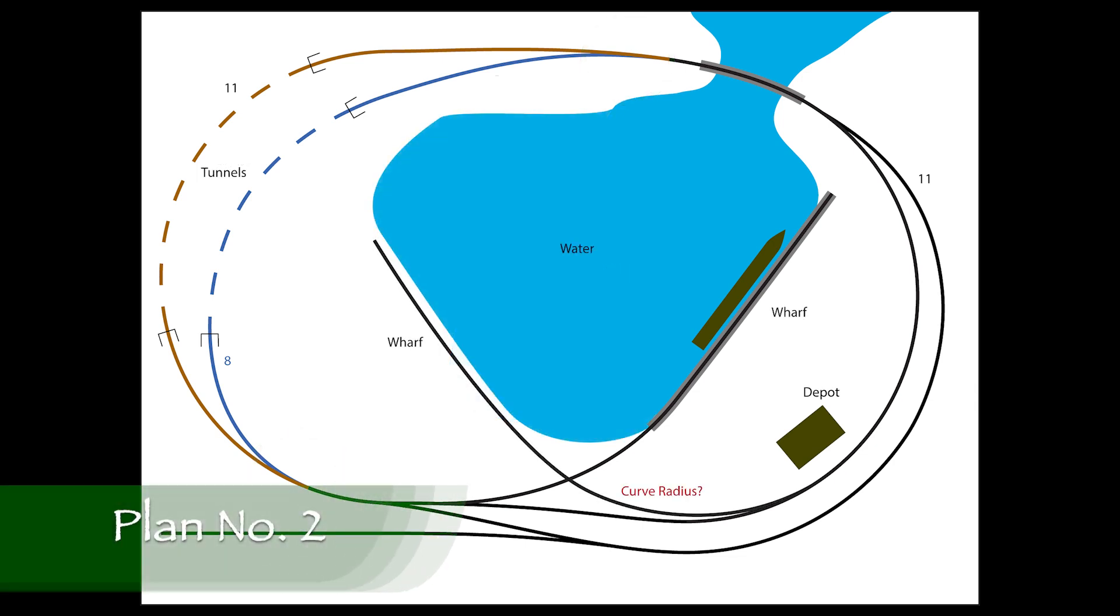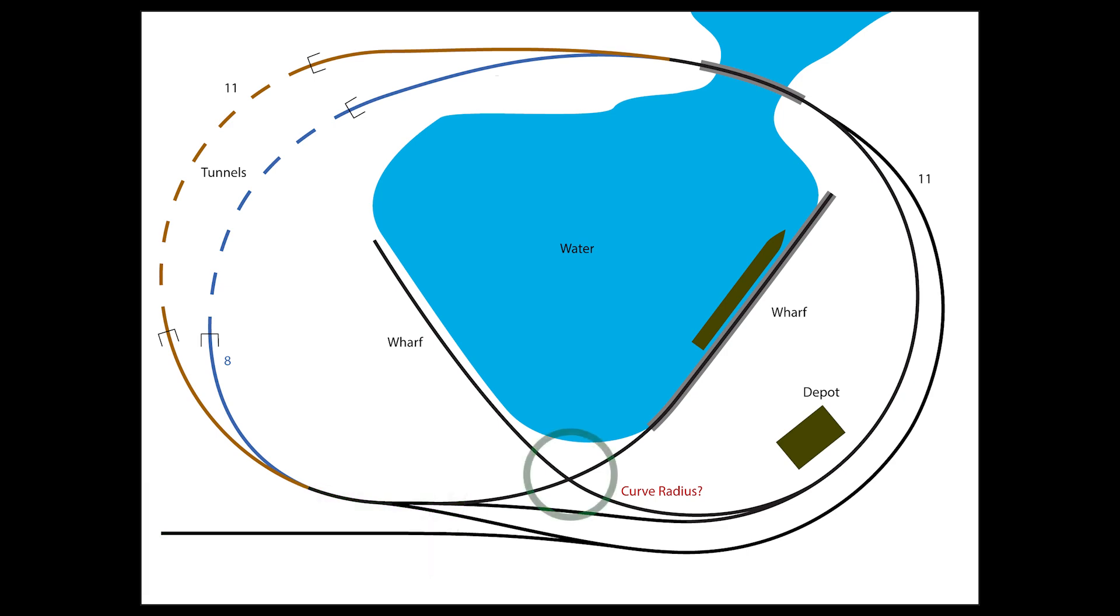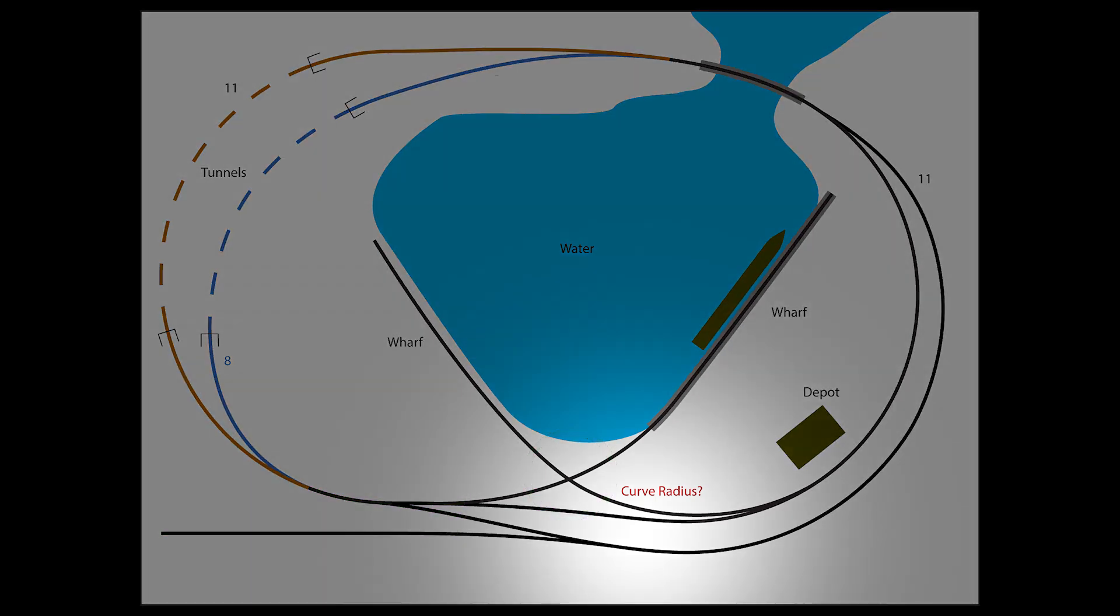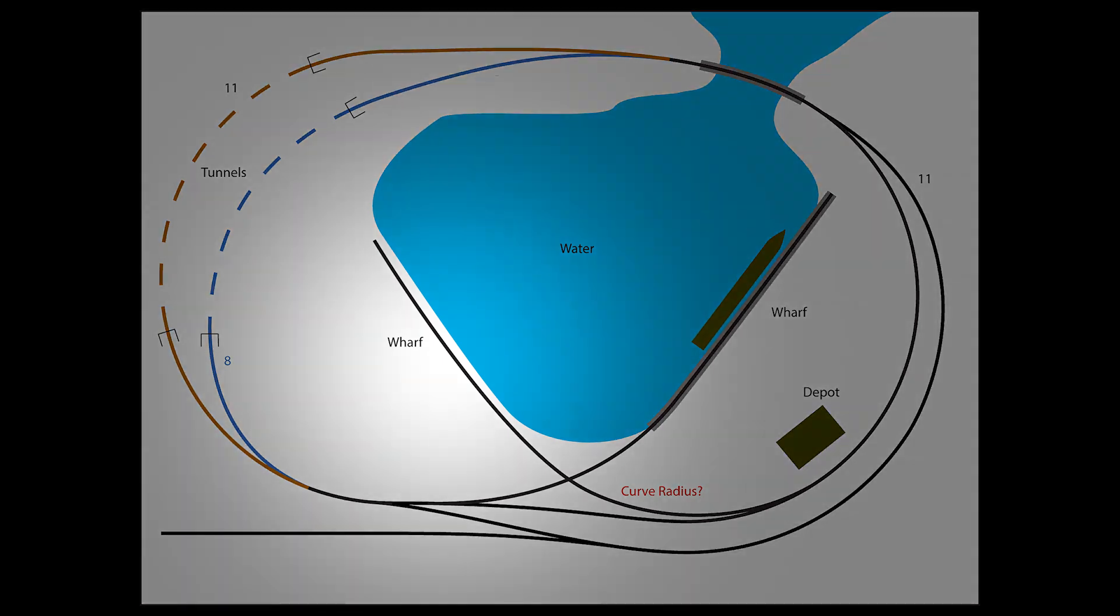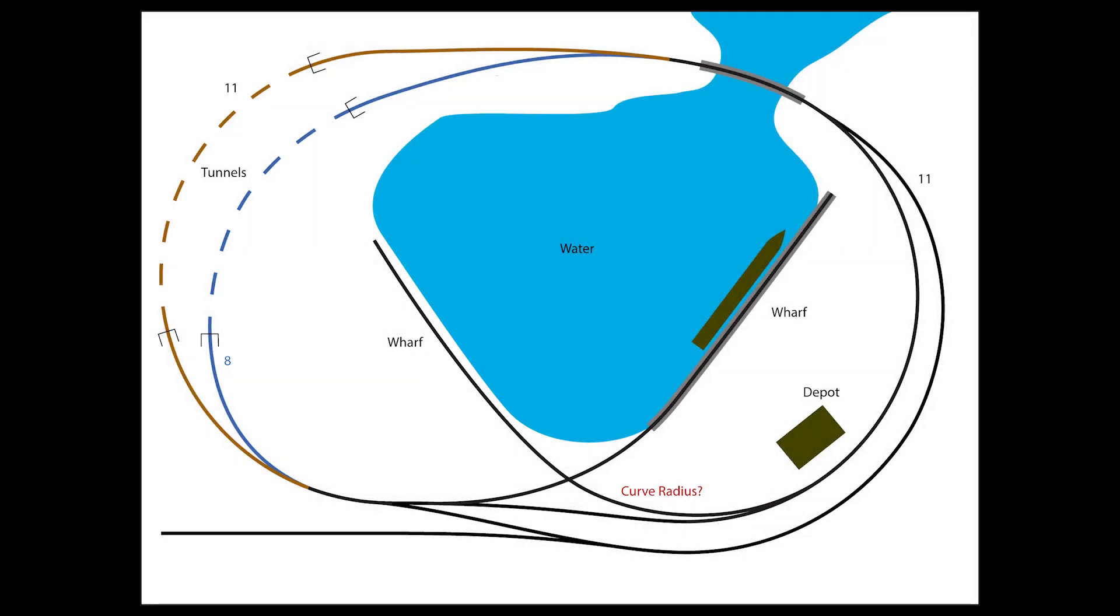This plan is an evolution of the first. I was attempting to add another spur and make it interesting by also having a crossing. The curve radius of the new spur is questionable though. It might be too tight near the turnout for good operation. Also having a spur track invade the town area cuts down on the scenic space. I don't really like this plan but it was a stepping stone in the evolution of the RV layout.